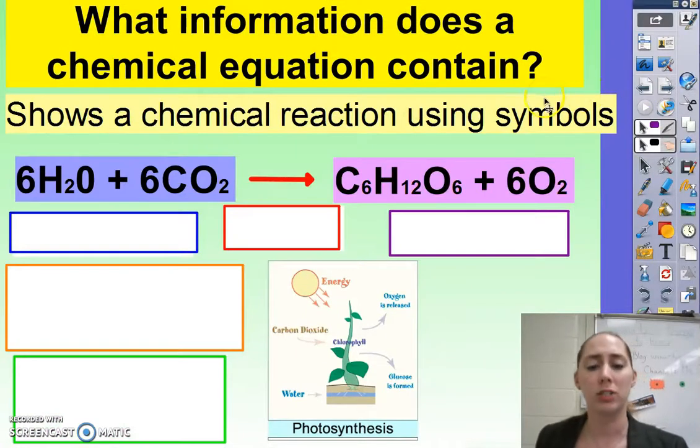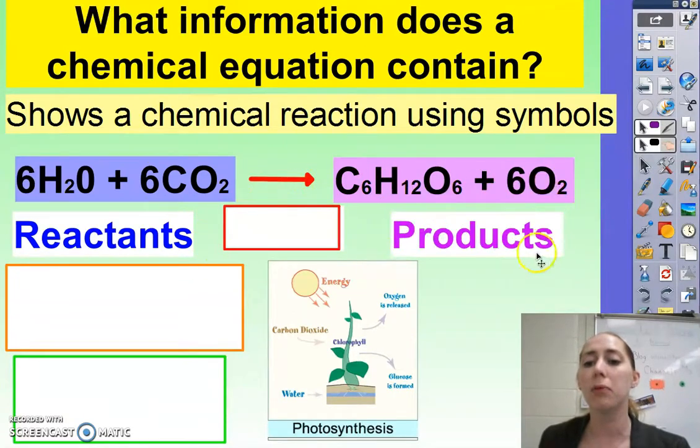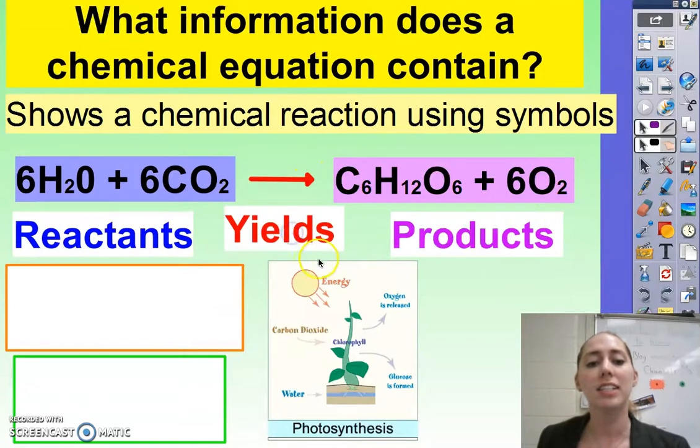Let's talk about chemical equations. As you know from 6th grade, they show a chemical reaction using symbols. Here on the left side, you have the things that are reacting together. We call those our reactants. On the right side, where the arrow is pointing to, we have our product. This is our end result. And the arrow here stands for yields. So water plus carbon dioxide yields glucose and oxygen. This is your photosynthesis equation from 7th grade.